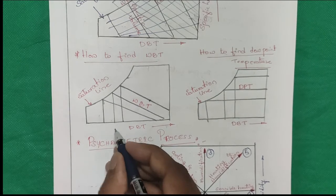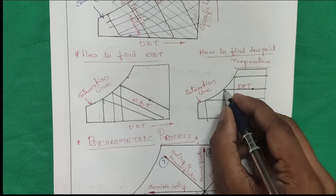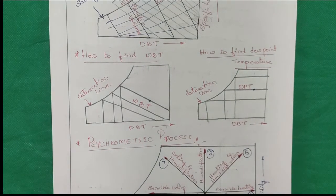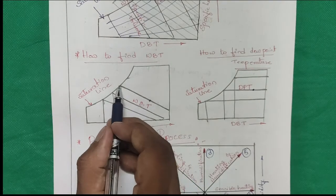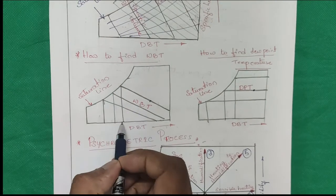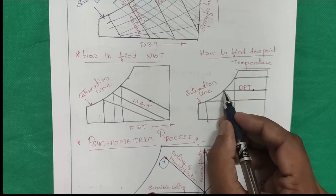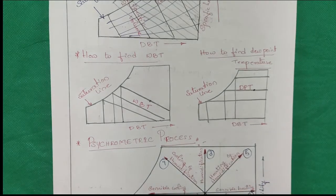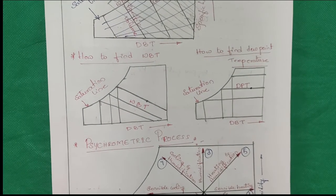What about dew point? You will get some point on the chart and you need to find out the dew point temperature. You have to draw a horizontal line up to the saturation curve, then draw a vertical line. So these two things are very important: for wet bulb temperature, draw an inclined line up to saturation then a vertical line; for dew point, draw a horizontal line up to the saturation curve then a vertical line.